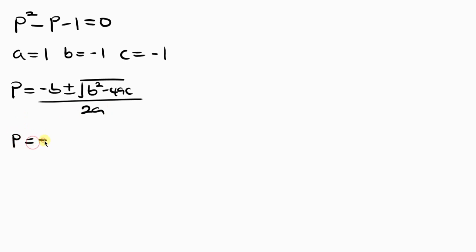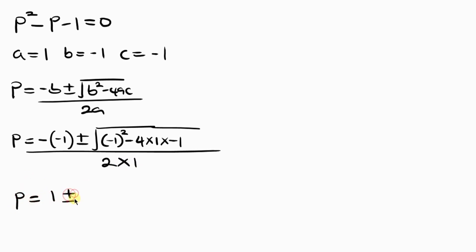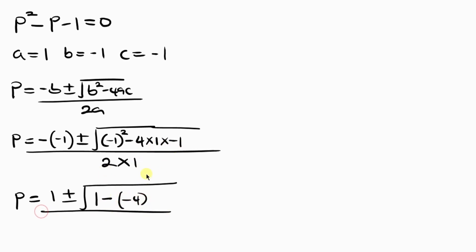Substituting our values: P equals negative B — B is negative 1 — plus or minus the square root of B squared, that means negative 1 squared, minus 4 times A — A is 1 — times C — C is negative 1 — all over 2 times A, which is 2 times 1. So P becomes 1 plus or minus the square root of: negative 1 squared is 1, minus 4 times 1 times negative 1 gives minus negative 4, all over 2. So P equals 1 plus or minus the square root of 5, all over 2.